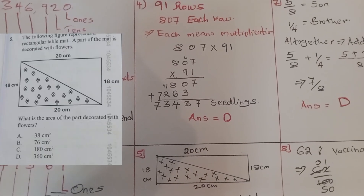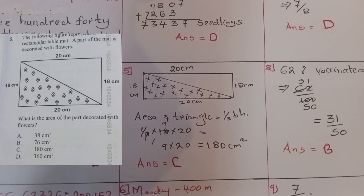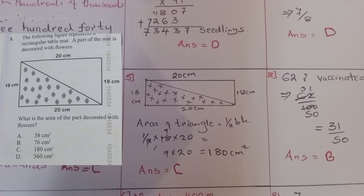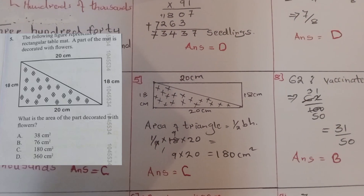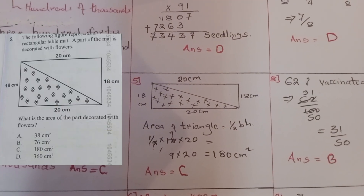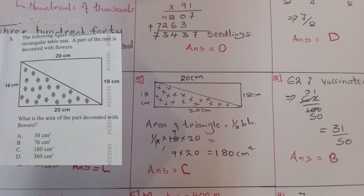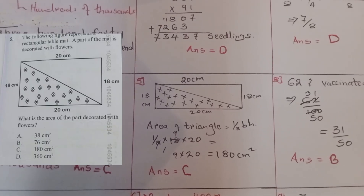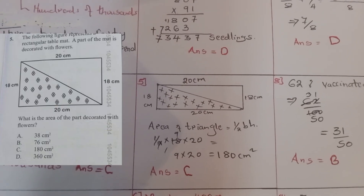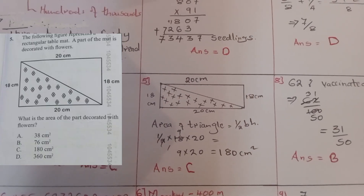Question five: the following figure represents a rectangular table mat, and a part of the mat is decorated with flowers. What is the area of the part decorated with flowers? You can approach this in two ways: first, calculate the area of the rectangle — 20 times 18 equals 360. Then calculate the area of the triangle using half base times height, which gives 180 square centimeters. So 360 minus 180 equals 180. The correct answer was C.